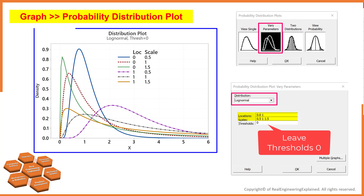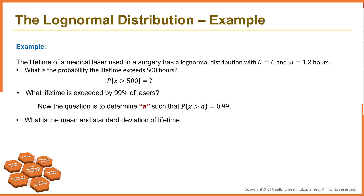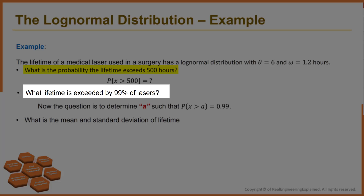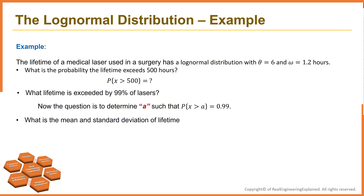Here is the graph which shows different distributions. Let's solve this example in Minitab. The lifetime of a medical laser used in surgery has a log normal distribution with theta equal to 6 and omega equal to 1.2 hours. What is the probability the lifetime exceeds 500 hours? What lifetime is exceeded by 99% of lasers? And what is the mean and standard deviation of the lifetime? We are going to answer these three questions in MATLAB and Minitab.